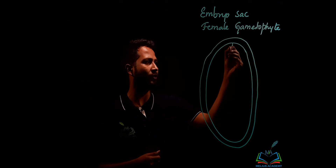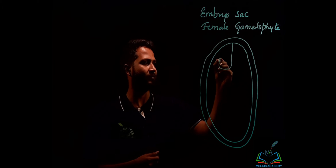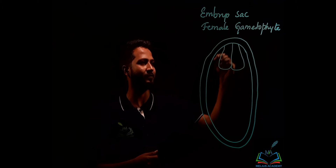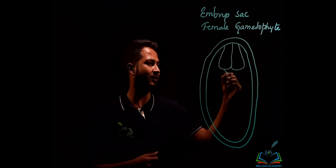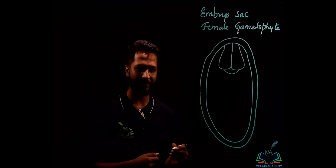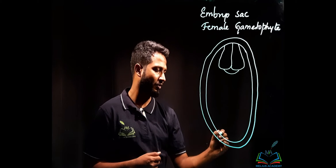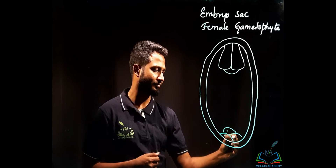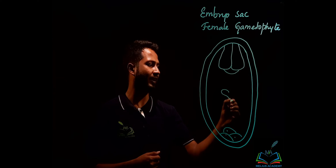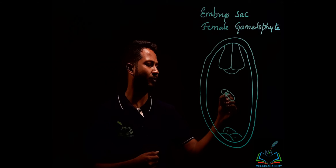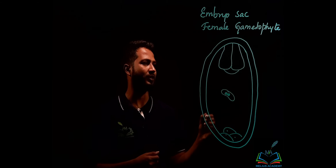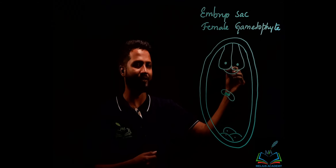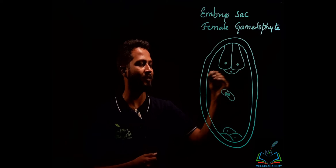On top I'll draw two large cells — bigger ones, two big cells like this. Then there is another cell drawn over here. At the bottom I will draw three cells called antipodal cells, and at the center we have two polar nuclei. We'll draw one nucleus here, another one in the synergids, and one egg cell nucleus.